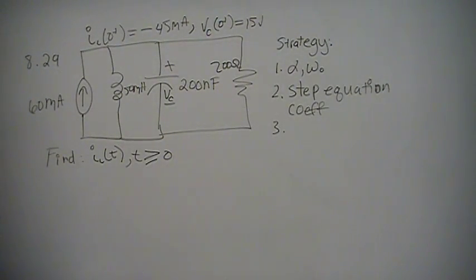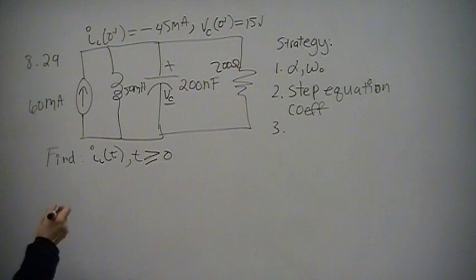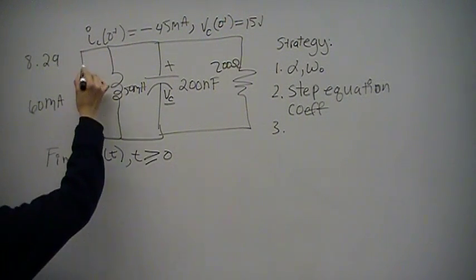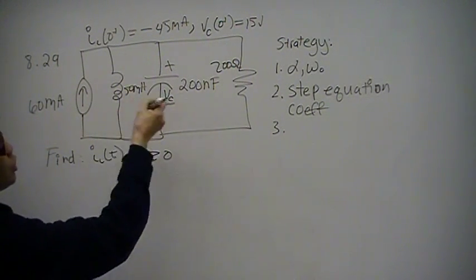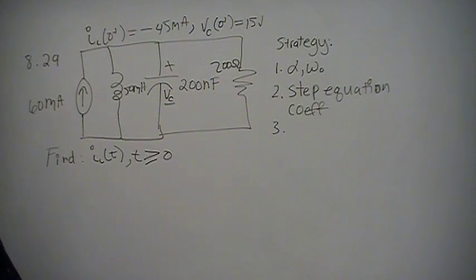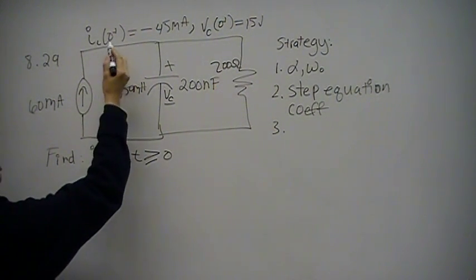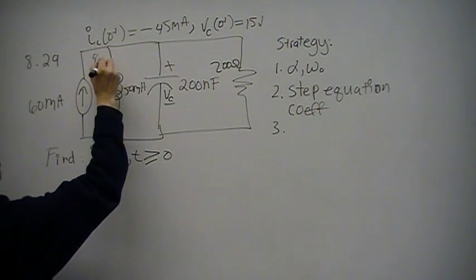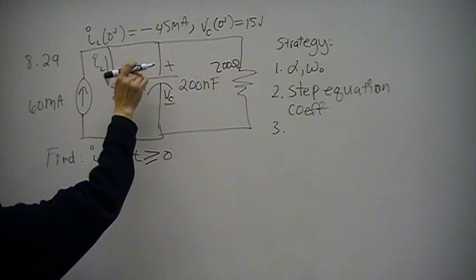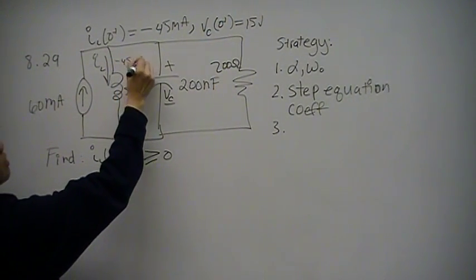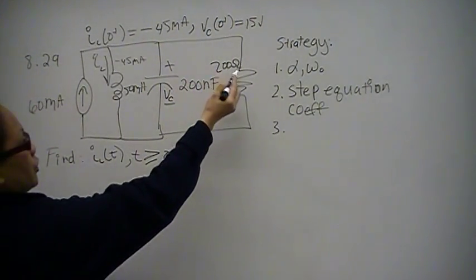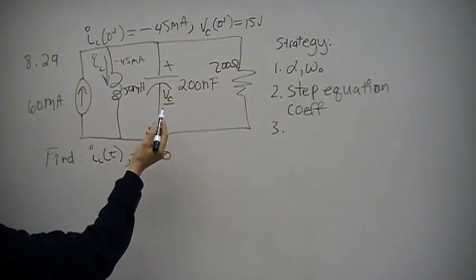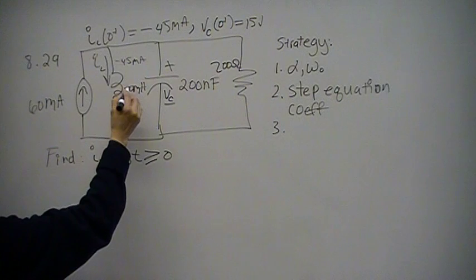This is the solution for problem 8.29 in Nielsen-Reidl's Electric Circuit Science Edition. In this problem, we have a 60 milliamp current source and it's not a step-response equation — we don't have a switch. We have initial conditions: current through the inductor right after time zero is going to be negative 45 milliamps, and capacitor voltage is 15 volts. We have a resistor of 200 ohms, 200 nanofarads for the capacitance, and 50 millihenrys.